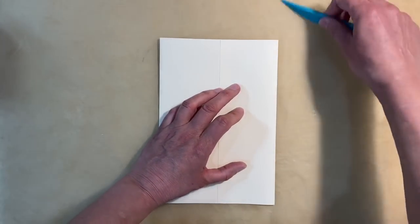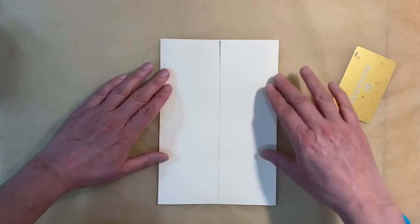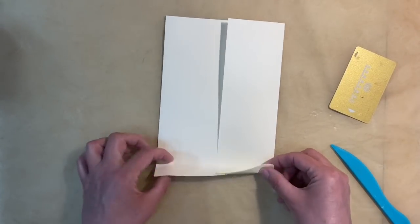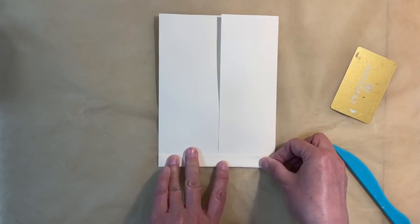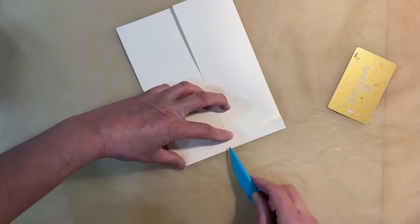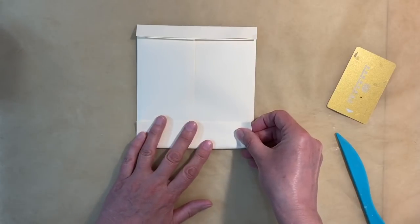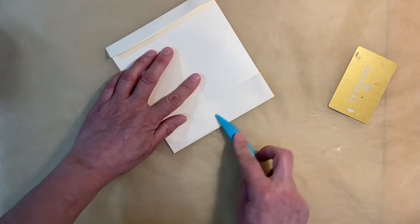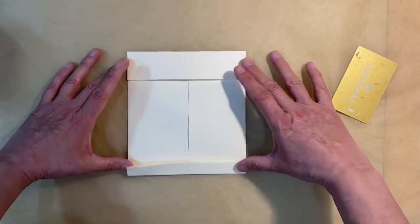You can use a bone folder or a key card, store card if you want to, just to make your creases more prominent. Then I am going to fold up a small amount at the bottom like this. Again, use my bone folder to make that crease. Turn it up the other way and I want a deeper fold at the top. Something like that. I'm not measuring this. I'm just eyeballing it so that it's pleasing to my eye.